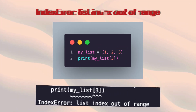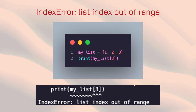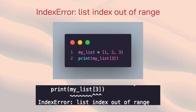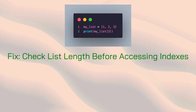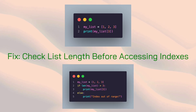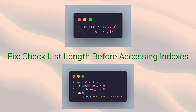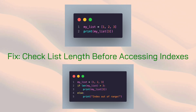Next, the dreaded IndexError — list index out of range. This means you're trying to access an index that doesn't exist in your list, like going too far forward or backward. To fix this, make sure you're only accessing indexes within the list's length. Use len to check how many items you have, or adjust your indexing.